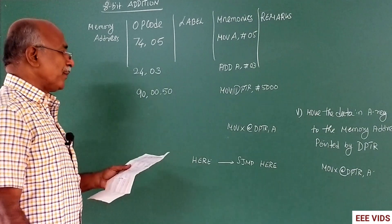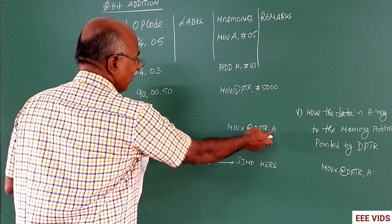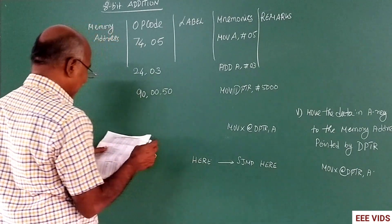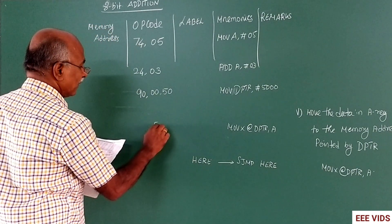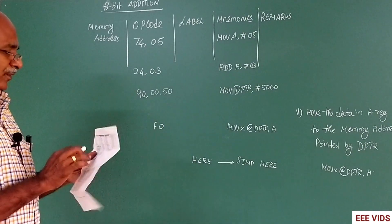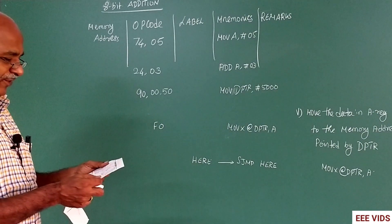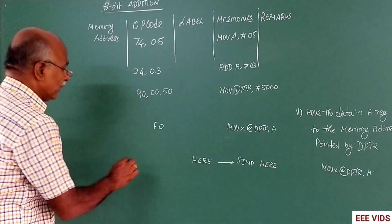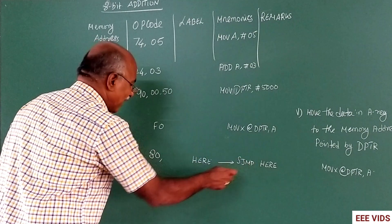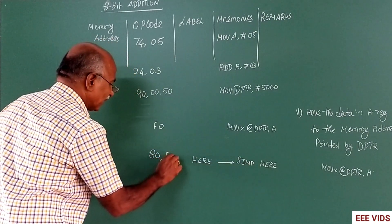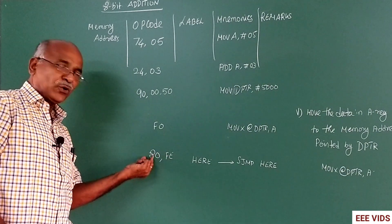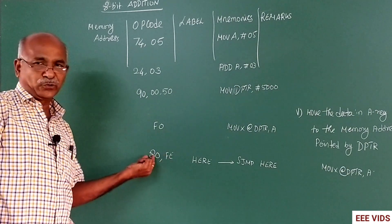MOV X@DPTR,A. A is data and DPTR indicates the location. The opcode is F0. Then SJMP, the opcode is 80. Which location it goes to - this location FE. It goes back using 80. FE is the data.